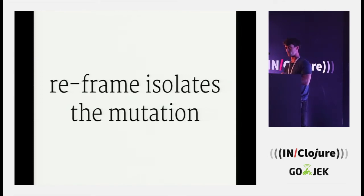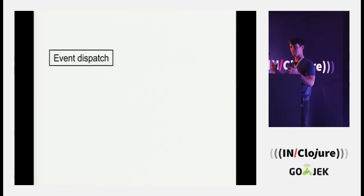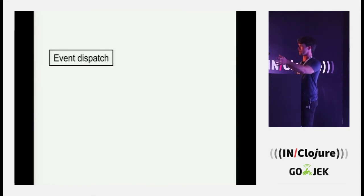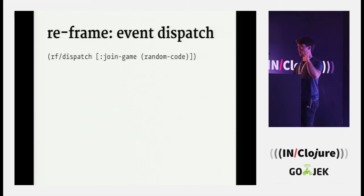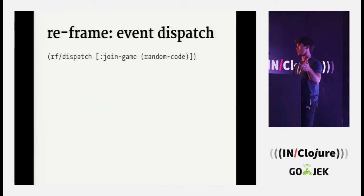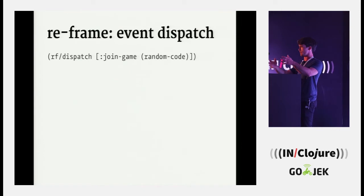How does Re-frame do this? It uses a loop. The loop starts with the event dispatch stage — basically a user doing something, like clicking a button, or an HTTP request finishing. Something happens that something should happen as a result of. In code, anytime you see RF, that's an alias to re-frame.core. Events are vectors — the first element is the name/type of the event, like join-game. Anything else in that vector is data passed along with the event. If someone clicks the join game button, dispatch this event.